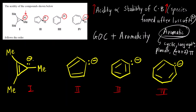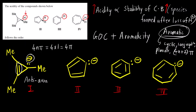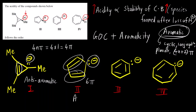Which of the following ions is aromatic? For compound 1, you can see 2 + 2 = 4 pi electrons. It follows the 4n pi electron rule — if n = 1, that gives 4 pi electrons — so this is anti-aromatic. For compound 2, you see 2 + 2 = 4, then 4 + 2 = 6 pi electrons, so this is aromatic.